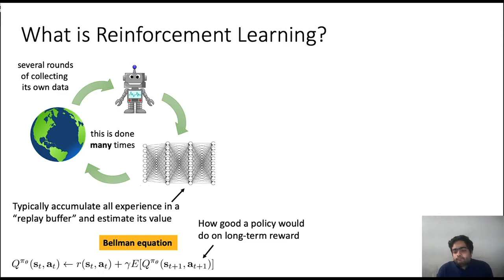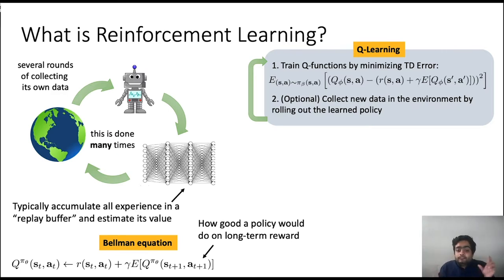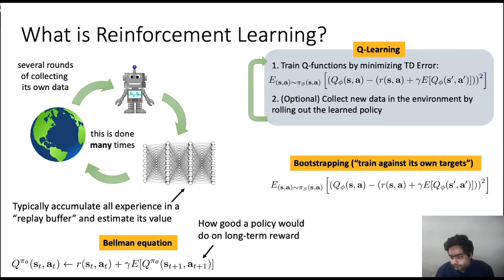Modern deep RL algorithms that train parametric Q-functions — neural network Q-functions — essentially convert this Bellman equation, this recursion, into a trainable objective by computing the residual error between the two sides of the Bellman equation. This error is also known as the temporal difference error. These methods then train a parametric neural network Q-function to minimize this error, and optionally collect more data and perform more training.